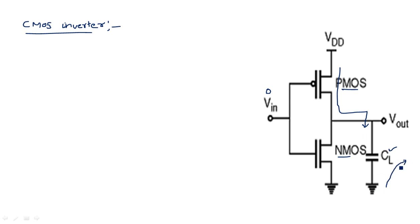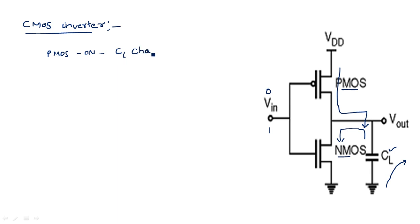During the reverse operation, when input is equal to 1, the PMOS transistor comes into OFF state and NMOS transistor comes into ON state, so the charge accumulated in the capacitor now has to be discharged through the ON NMOS transistor. So how to calculate the overall time delay? There are two actions: when PMOS transistor is ON, capacitor CL charges; when NMOS transistor is ON, capacitor CL discharges.